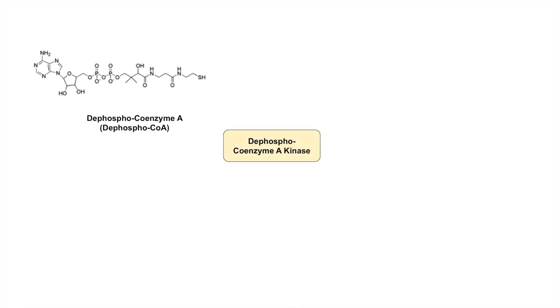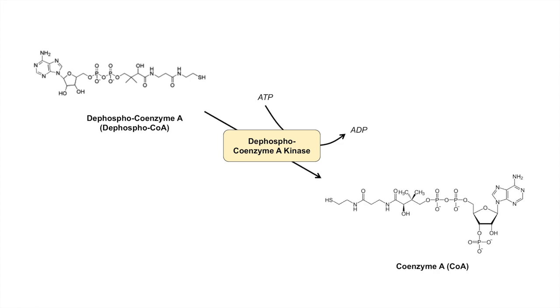Once we have D-phospho-coenzyme A, we're getting pretty close to the end product. It gets acted on by the enzyme D-phospho-coenzyme A kinase. Again, it's a kinase — it adds a phospho group to the D-phospho-coenzyme A. This phospho group gets added on to the five-membered ring here to give us a phospho group attached there. And this is essentially what is coenzyme A.